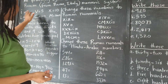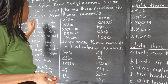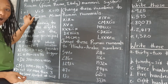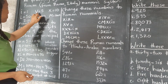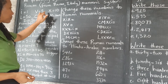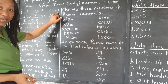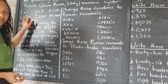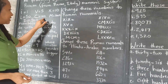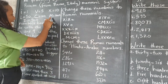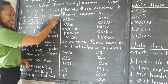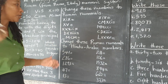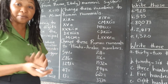The symbols represent numbers. So the I represents 1, V represents 5, X represents 10, L represents 50, C represents 100, M represents 1000, and D represents 500.